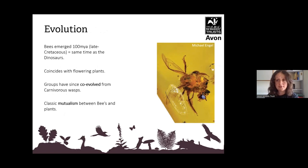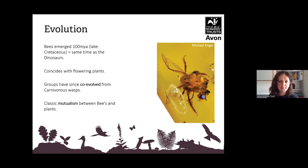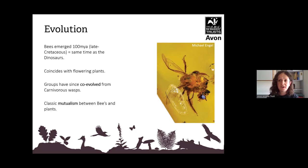Bees and flowers, plants, all coincide with each other — you can't have one without the other. They've co-evolved and this is called classic mutualism, meaning that the relationship between bees and plants benefits each other. Bees have evolved from carnivorous wasps — they were once meat eaters and somewhere along the line they became vegetarians and started drinking nectar and pollen.